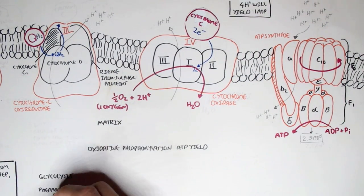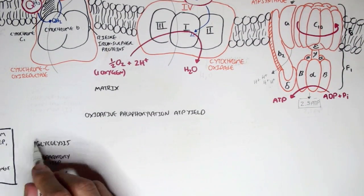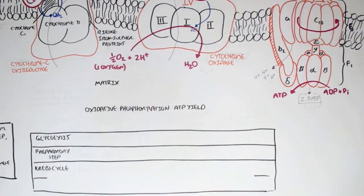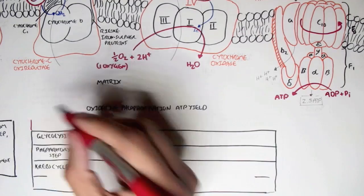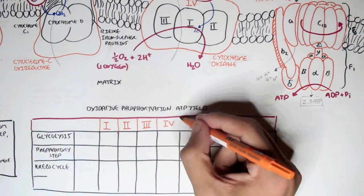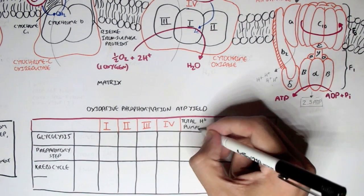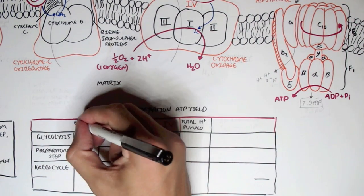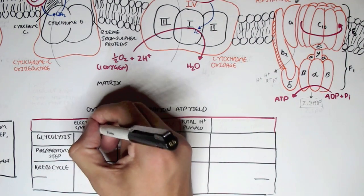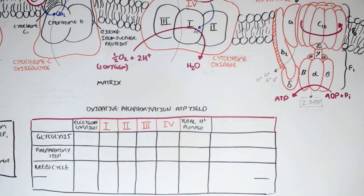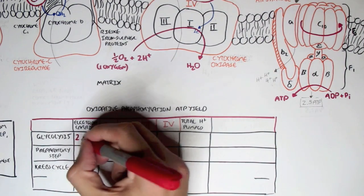Let us draw up a table of oxidative phosphorylation and the ATP yield. Let's look at all the processes beforehand which provided the electron carriers, beginning with glycolysis. Glycolysis produced two NADHs.